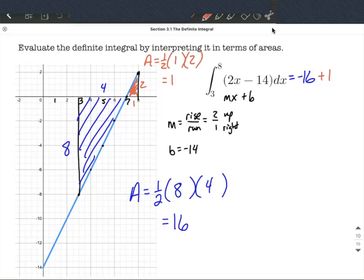So areas above the x-axis are positive. Areas below the x-axis are negative. So add those, combine those like terms together. We get negative 15 is going to be that definite integral.